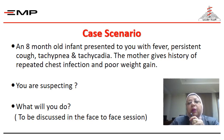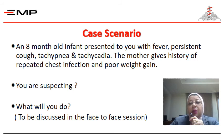Now we are going to see this case scenario. An 8-month-old infant presented with fever, persistent cough, tachypnea, and tachycardia. Tachypnea means rapid respiration, and tachycardia means rapid heart rate. The mother gives a history of repeated chest infections and poor weight gain.